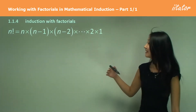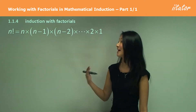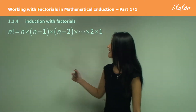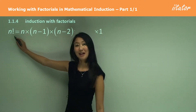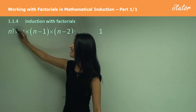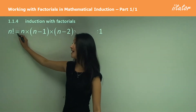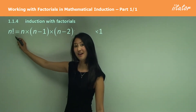So first of all let's remember what the sign for factorial is — that's this exclamation mark here. So we have N exclamation mark, and this is our factorial sign.